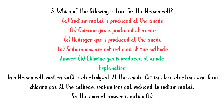MCQ 5: Which of the following is true for the Nelson cell? A. Sodium metal is produced at the anode. B. Chlorine gas is produced at anode. C. Hydrogen gas is produced at the anode. D. Sodium ions are not reduced at the cathode. Answer: B. Chlorine gas is produced at anode. Explanation: In a Nelson cell, molten NaCl is electrolyzed. At the anode, Cl⁻ ions lose electrons and form chlorine gas. At the cathode, sodium ions get reduced to sodium metal. So the correct answer is option B.